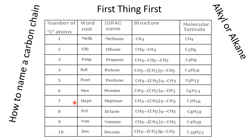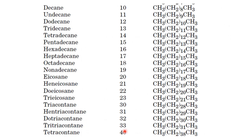Carbon 7 uses hept-, carbon 8 uses oct-, carbon 9 uses non-, and for 10 we use dec-; as a parent chain it is called decane. An 11-carbon chain is called undecane, 12 is dodecane, then tridecane, tetradecane, pentadecane, hexadecane, heptadecane, octadecane, nonadecane, and a 20-carbon chain is called icosane.